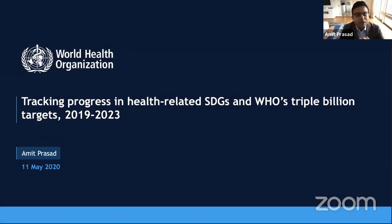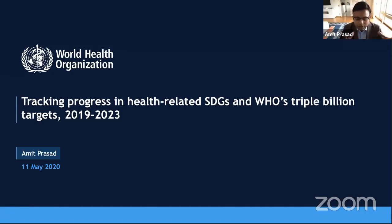My name is Amit Prasad and I work with the Division of Data Analytics and Delivery for Impact at WHO headquarters in Geneva. I'm coordinating the development and application of the WHO results framework, which is a system that defines how we are going to measure WHO's and countries' impacts on the health of people between 2019 and 2023. This includes tracking progress in the health-related SDGs as well as WHO's triple billion targets, which I will define in my presentation.